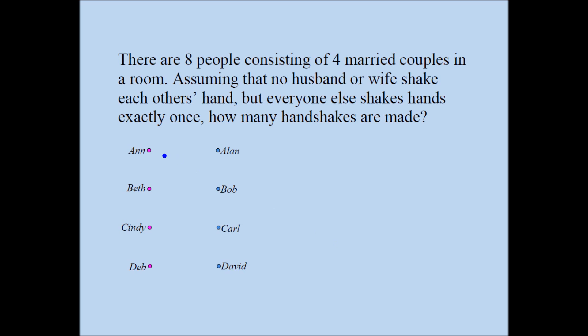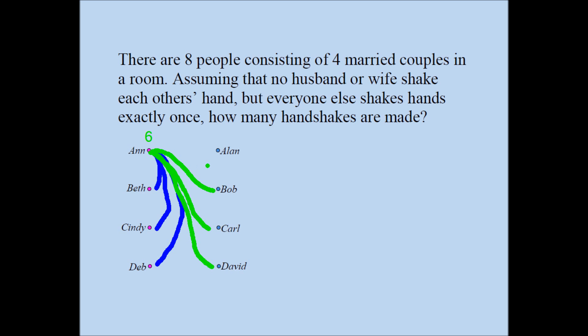Now how many handshakes would Anne have? Anne will shake hands with the three women and also with the three men — she is not shaking hands with her husband. So altogether Anne will have six handshakes. There are eight people and Anne shakes hands with everyone except herself and her husband, so eight minus two is six.